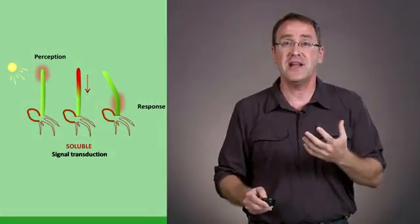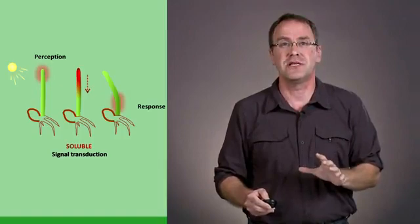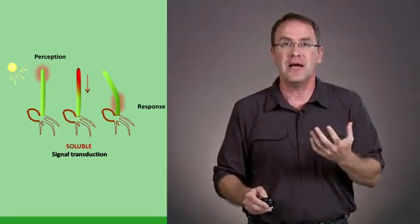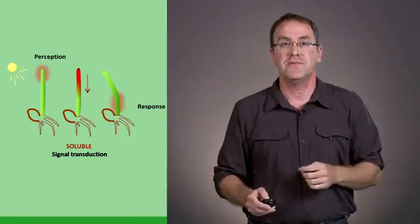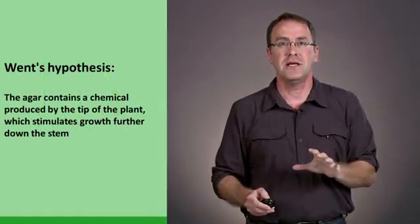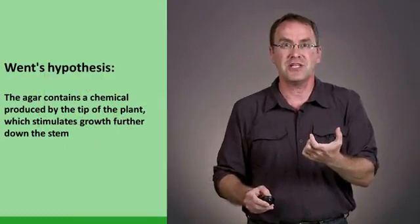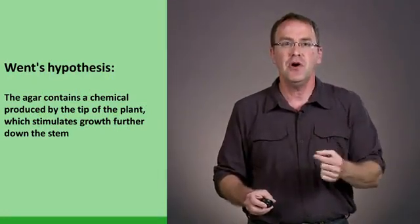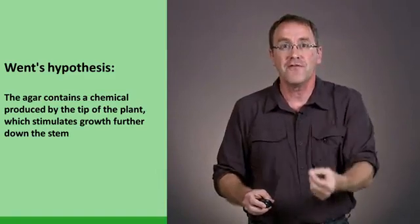But the question then, of course, is what is the soluble signal? The soluble signal was isolated in 1926 by another scientist named Went. His hypothesis was that the gelatin, or what we actually call agar, contains a chemical produced by the tip which stimulates growth further down the stalk.